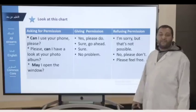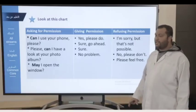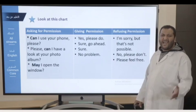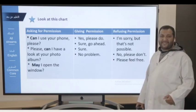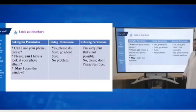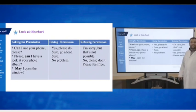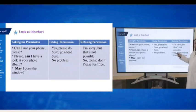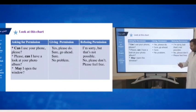By refusing the permission, you can use the following expressions: I'm sorry, but — or, that's not possible — or, no, please don't. The last one is: please, feel free. Please try to read these expressions because we need them to be used in the next activity, so let's practice what we have learned so far.